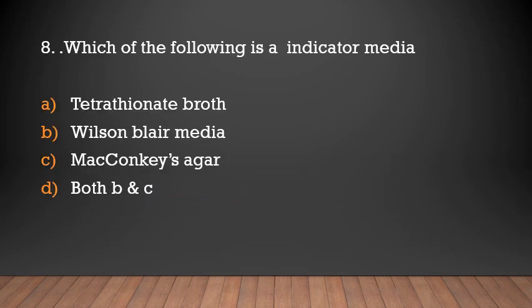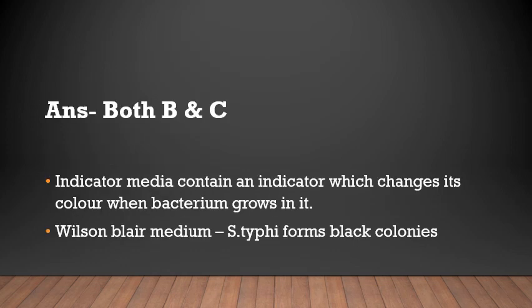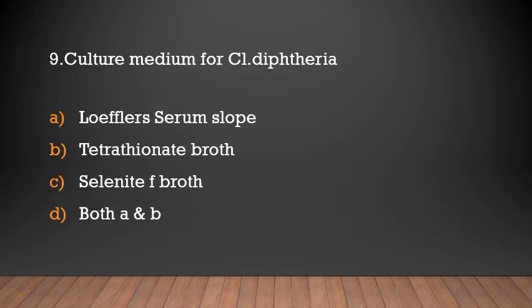Which of the following is an indicator media? The answer is Tetrathionate broth. For Corynebacterium diphtheriae, the options are Loffler's Serum Slope, Tetrathionate broth, Selenate F broth, or both A and B.